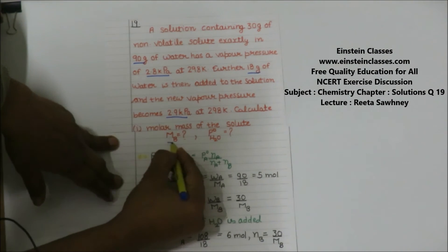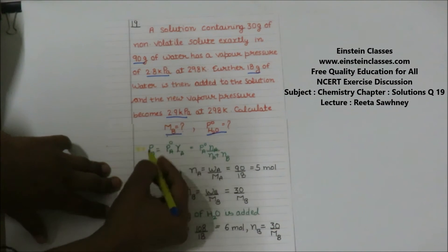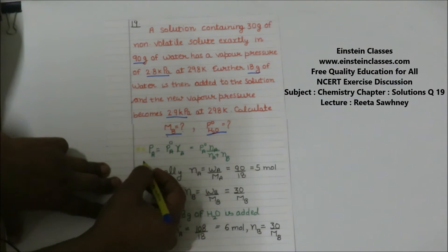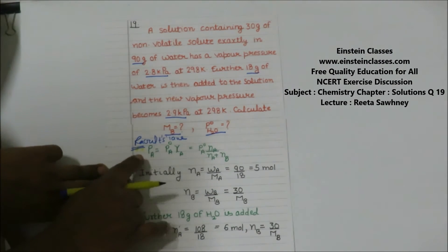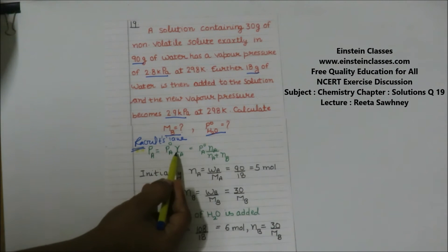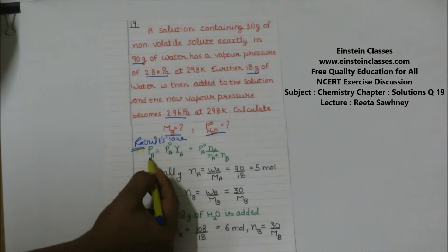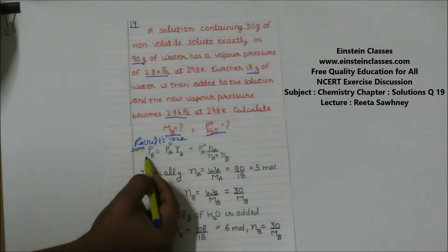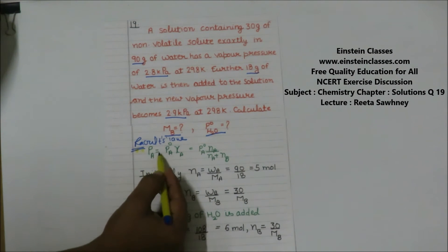We need to find the molar mass of the solute and the vapor pressure of pure water. Before starting, we write the concept we are going to follow. According to Raoult's law, the partial pressure of a solvent equals the vapor pressure of the pure solvent multiplied by the mole fraction of the solvent in the solution. Because the solute is non-volatile, the partial pressure of the solvent is essentially the total vapor pressure of the solution.